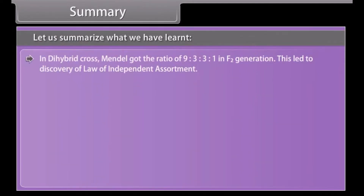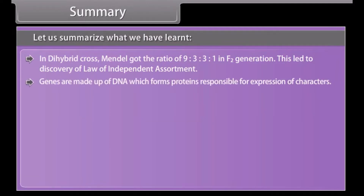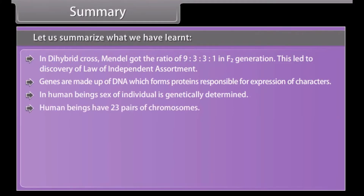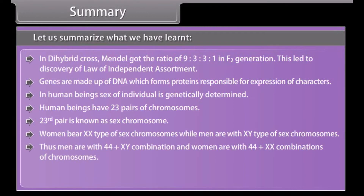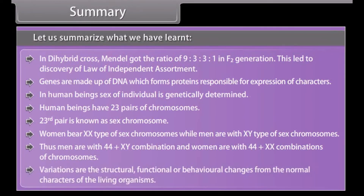In the dihybrid cross, Mendel got the ratio of 9:3:3:1 in the F2 generation, which led to the discovery of the law of independent assortment. Genes are made up of DNA which forms proteins responsible for the expression of characters. In human beings, the sex of an individual is genetically determined. Human beings have 23 pairs of chromosomes; the 23rd pair is known as the sex chromosome. Women bear XX type of sex chromosomes while men have XY type. Thus men have 44+XY and women have 44+XX combinations of chromosomes. Variations are the structural, functional, or behavioral changes from the normal characters of living organisms.